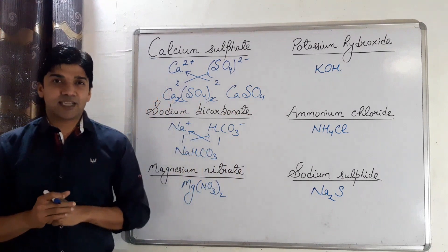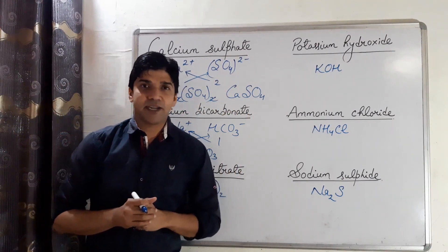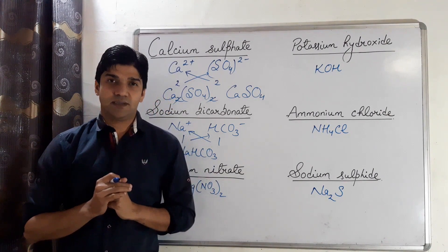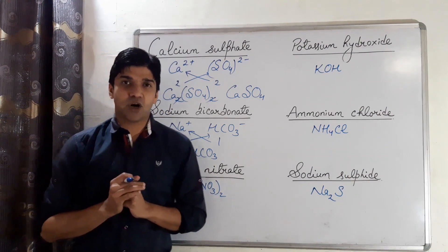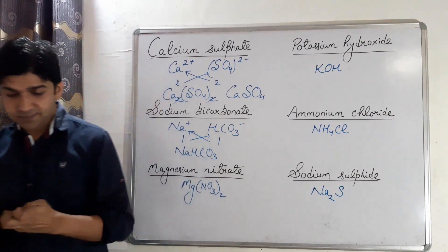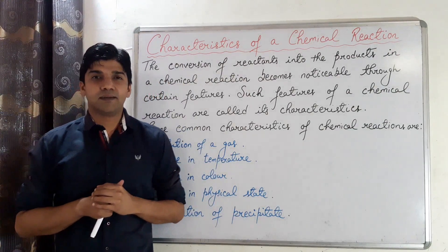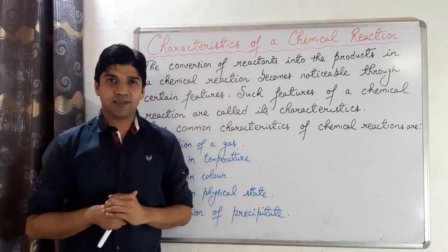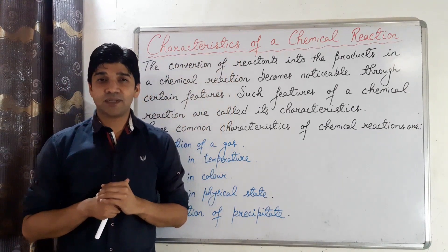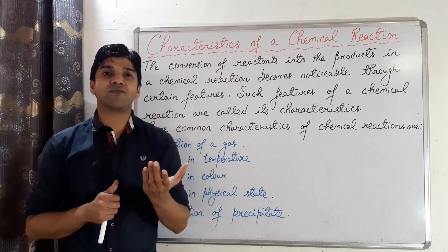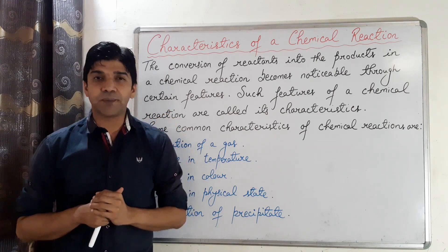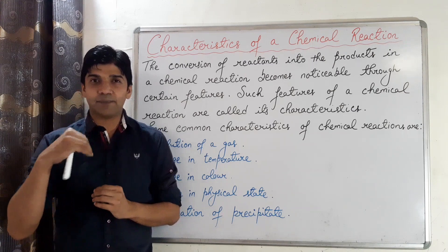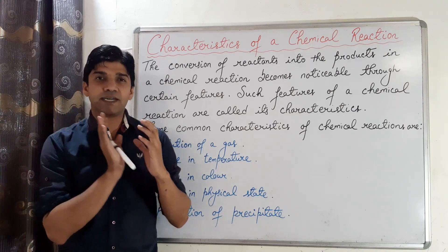So that was your homework from the last lecture. Now let's start with the new topic: Characteristics of a Chemical Reaction. What is a chemical reaction? The processes in which new substances with new properties and composition are formed are called chemical reactions. In a chemical reaction, reactants are converted into products.